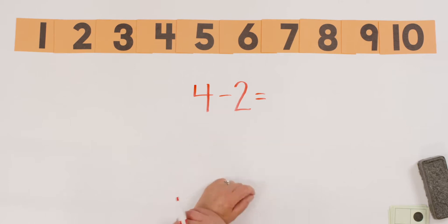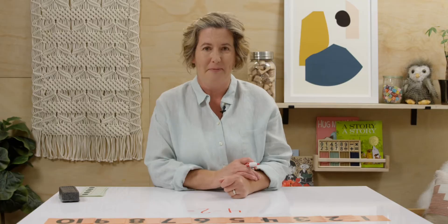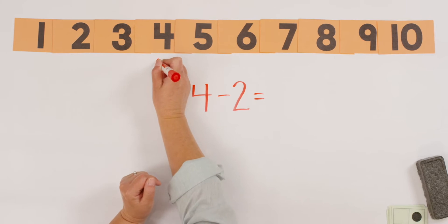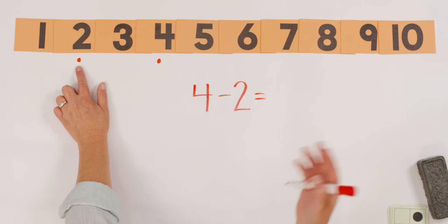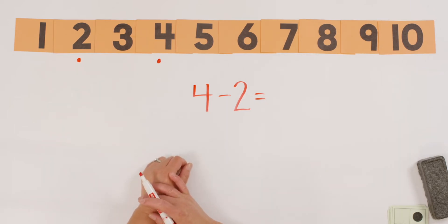4 minus 2 equals, I don't know, but let's find these numbers on our number line. I see there's the 4 and there's the 2. I'm going to put a little dot by the 4 and a little dot by the 2. Are they close together? Yeah, they're pretty close together. They're not that far apart. So here's the trick. Instead of counting backwards, we could count on. Remember how we have been practicing counting on before? You start with the smallest number and we count on till we get to our answer.